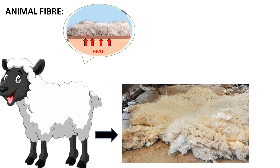When the climatic conditions outside are much colder, animals use this thick layer of hair to protect themselves from the cold. Even rabbits, dogs, and other animals living in hilly areas have a thick layer of hair on their body to protect themselves from harsh climatic conditions.